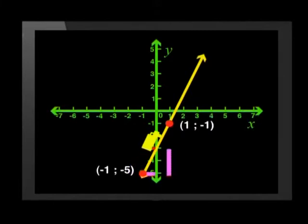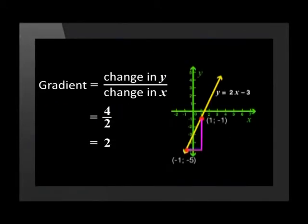Walking up the slope, you have moved from negative 5 to negative 1 on the y-axis. That's four steps. And you moved from negative 1 to 1 on the x-axis. That's two steps. We calculate the gradient of the slope like this.